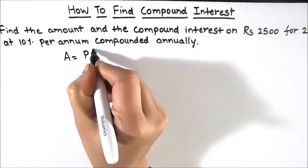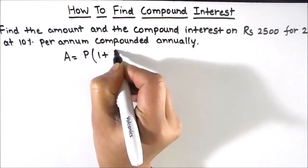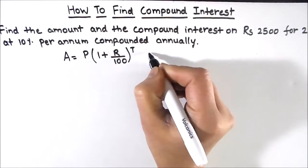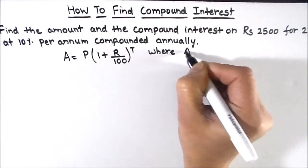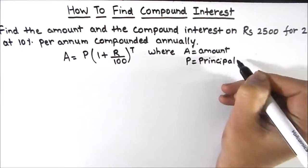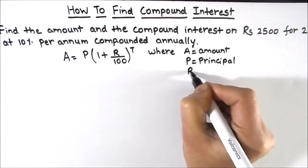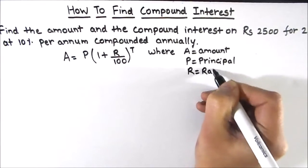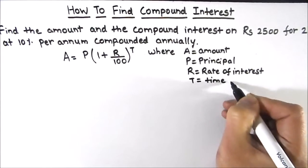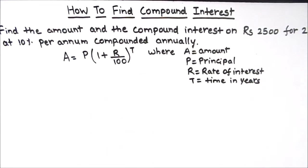The formula for finding amount is A equals P times 1 plus R upon 100 whole raised to power T, where A is the amount, P is the principal amount, R is the rate of interest in percentage, and T is the time in years.